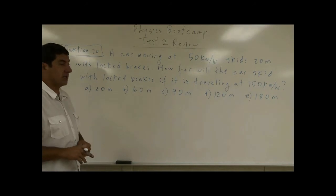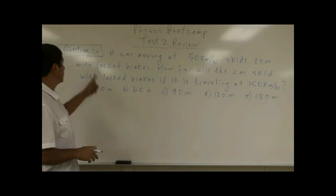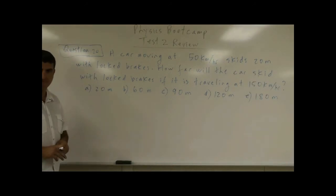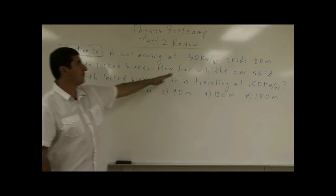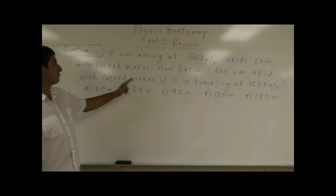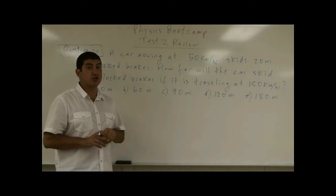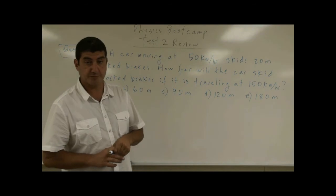A car moving at 50 km per hour skids 20 meters with locked brakes. So if you're going 50 km per hour, you're skidding 20 meters. How far will the car skid with locked brakes if it is traveling at 150 km per hour?